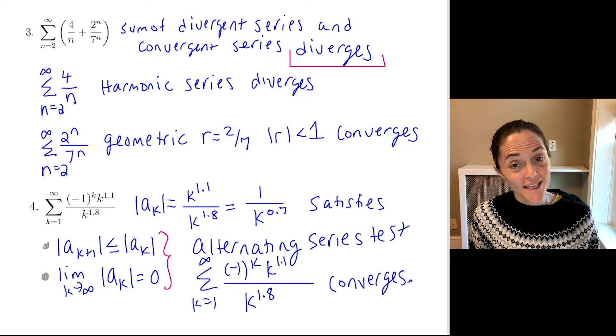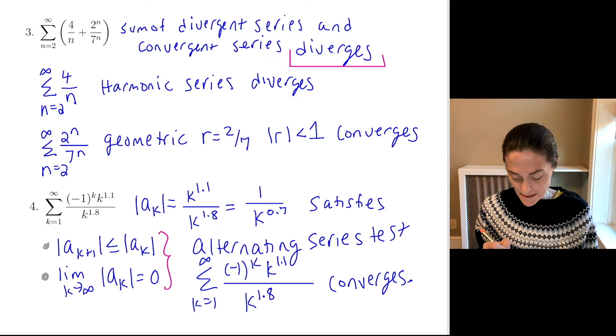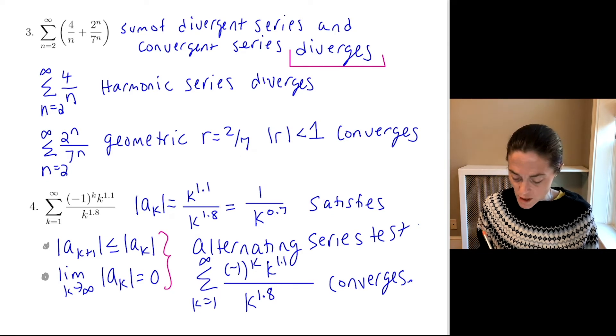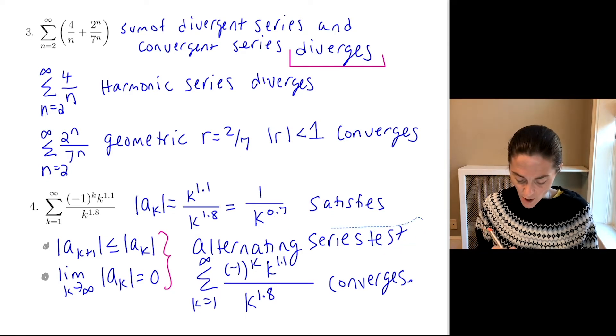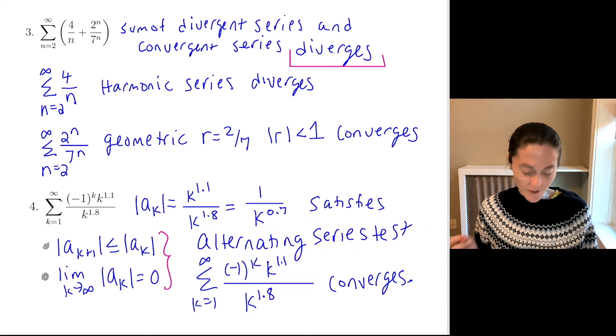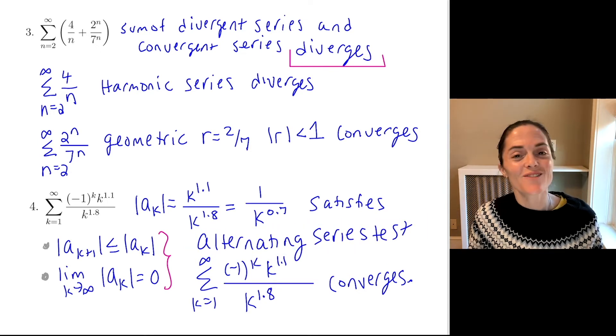Now, as a remark, this will converge conditionally because this, if you look at the sum of absolute value of a_k, we have a divergent p-series. So this will converge conditionally, but we weren't asked to specify which type of convergence. All we needed was converges or diverges. And so this alternating series test is perfectly fine.